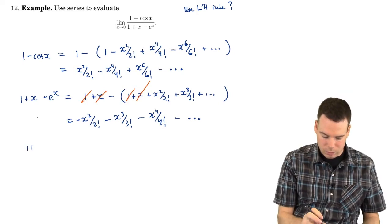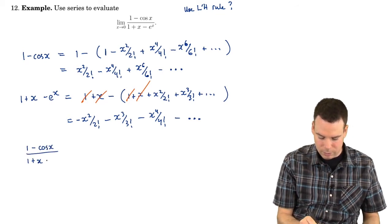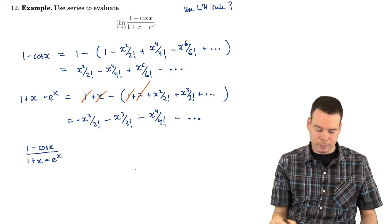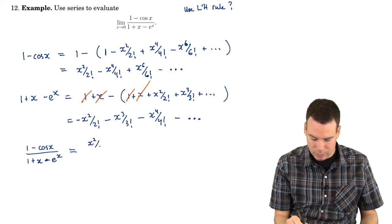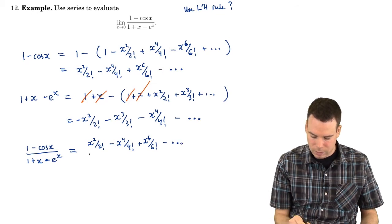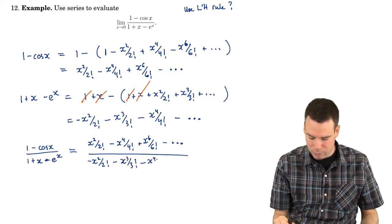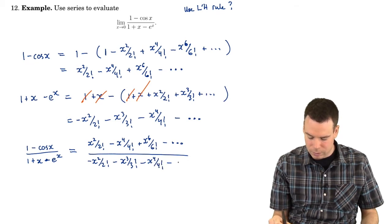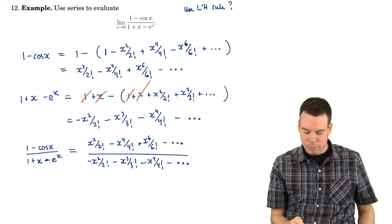So our function is 1 minus cos x all over 1 plus x minus e to the x. I'm replacing both numerator and denominator with their series expansions. The top is x squared over 2 factorial minus x to the 4th over 4 factorial plus x to the 6th over 6 factorial. The bottom is negative x squared over 2 factorial minus x cubed over 3 factorial minus x to the 4th over 4 factorial and so on. Notice that every term in the top and every term in the bottom has x squared as a factor.